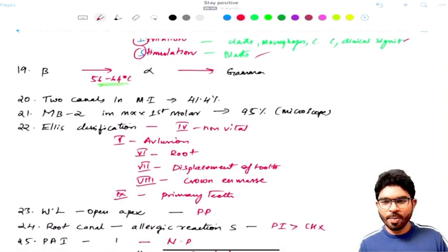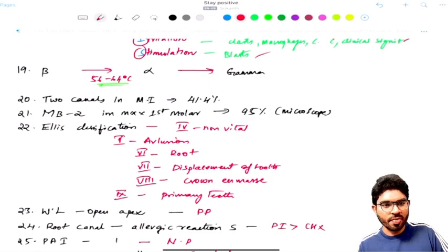And 20th question is a very familiar question - it's repeated so many times in NEET, in INICET. Two-canal configuration in the mandibular incisors is seen in around 41.4% of cases. MB2 is again a familiar question. MB2 percentage in the case of maxillary first molar in the microscope, not to the naked eye, in the microscope is around 95% of cases.